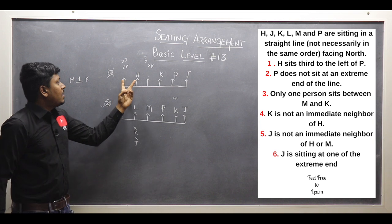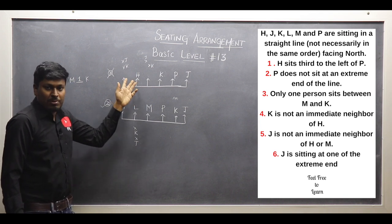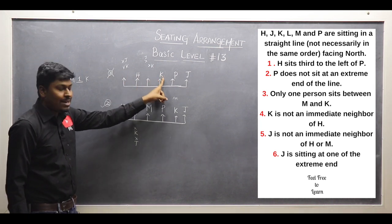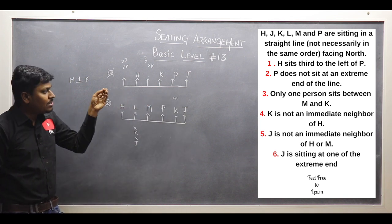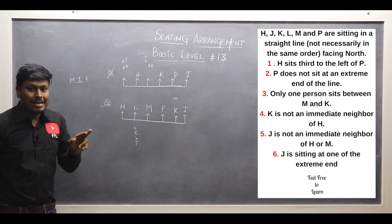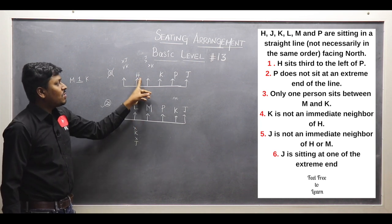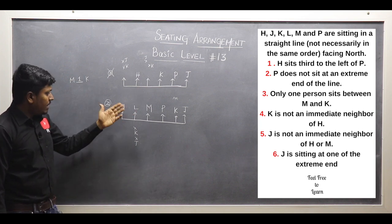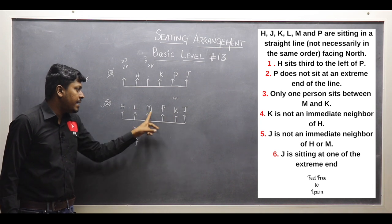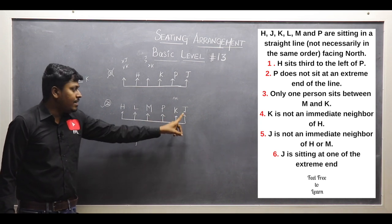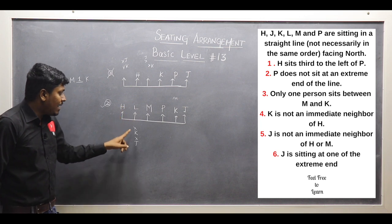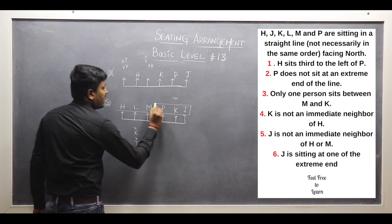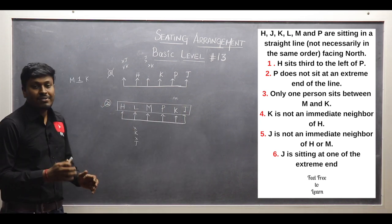In possible diagram 2: K cannot be placed adjacent to H, so I fix K at the only valid position. Between K and M there should be a gap of one person, so I fix M accordingly. J is at one extreme end, and K is not an immediate neighbor of H. The remaining letter L fills the last position. J is sitting at one of the extreme ends, K and J are not immediate neighbors of H — so this is the final answer for arrangement number 13.